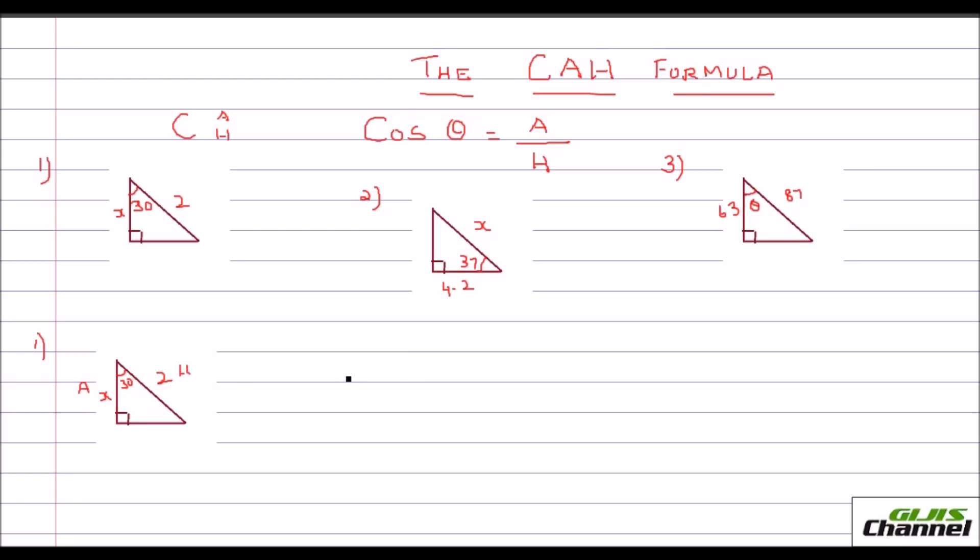So let's apply the CAH formula here. Cos 30 is equal to cos theta. Theta is 30 in this problem. So cos 30 would be adjacent side. Here adjacent side is given as x. We are to find out this value over the hypotenuse. Hypotenuse here is 2.